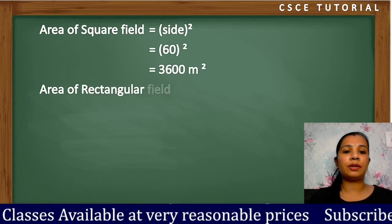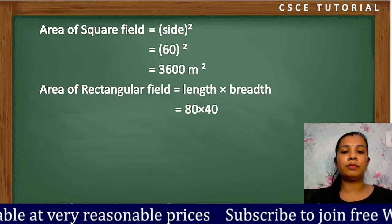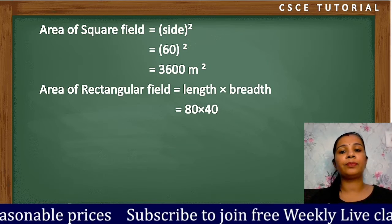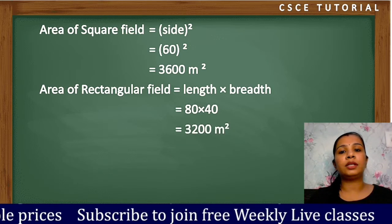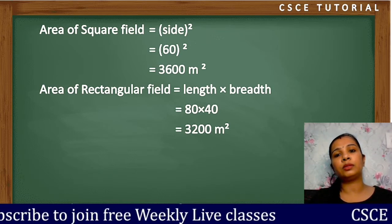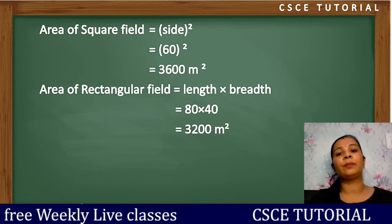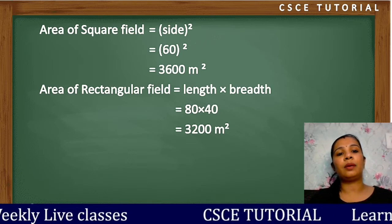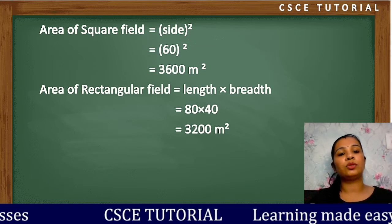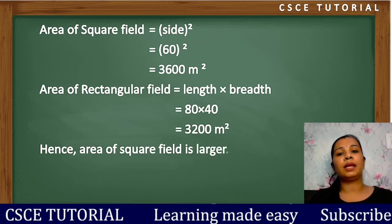Now we will find the rectangle area. The formula is length × breadth. After calculating, the area of the square field is larger. Hence the area of the square field is larger.